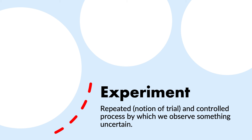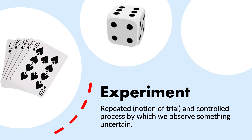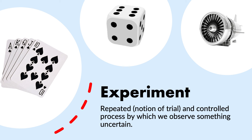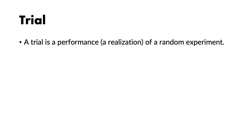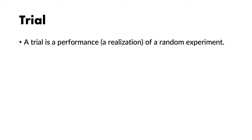Examples of experiments include rolling a dice and seeing what face comes up, taking a card from a card deck, or in maintenance, investigating the lifetime — how long a system will last. A random experiment involves the notion of trial, which in the case of the dice is every time you roll it. It is a performance, a repetition, or in other words, a realization of a random experiment.